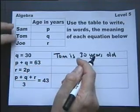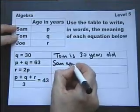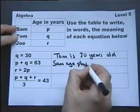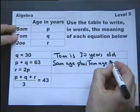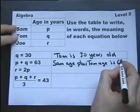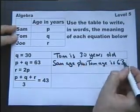P plus Q is 63. So Sam's age plus Tom's age is 63. I'm not saying this is the way you have to put it exactly, as long as your sentence means the same thing as mine.